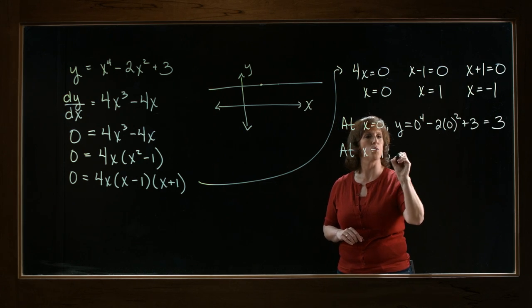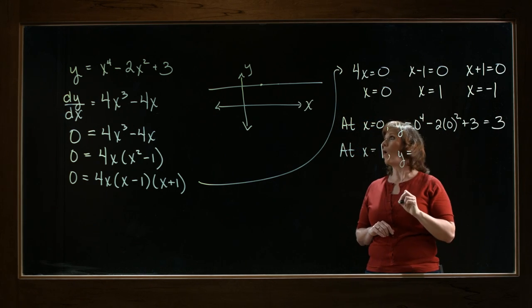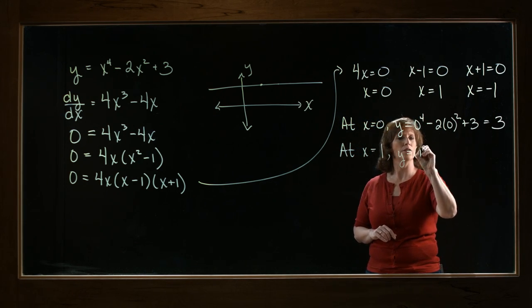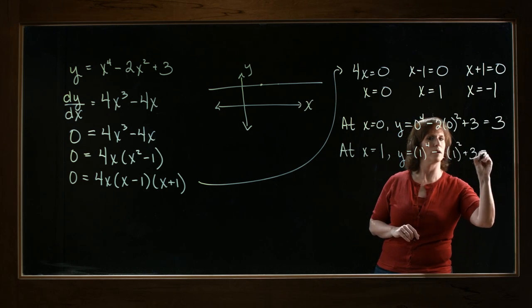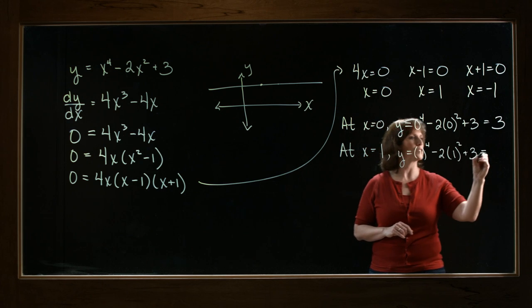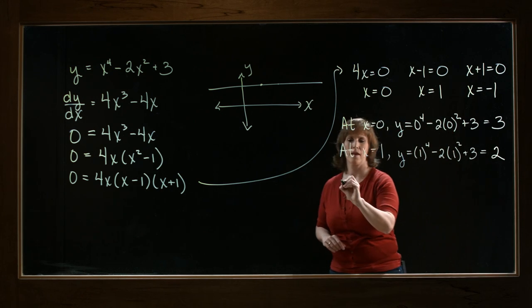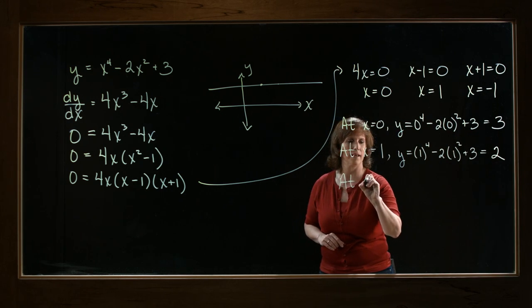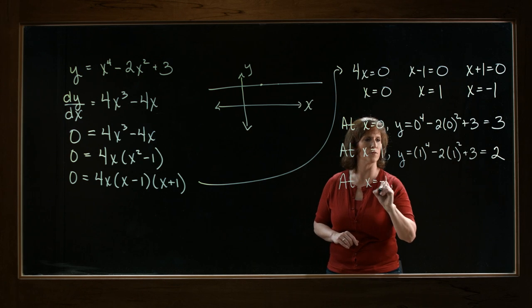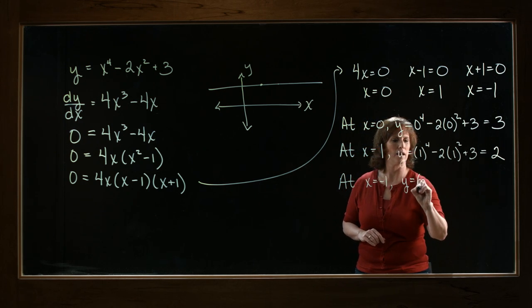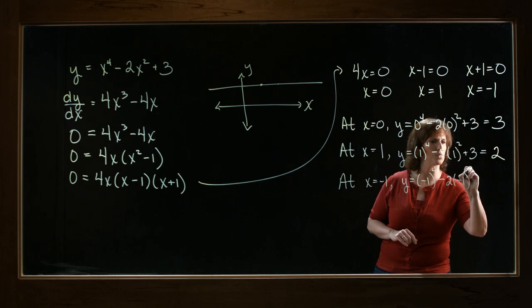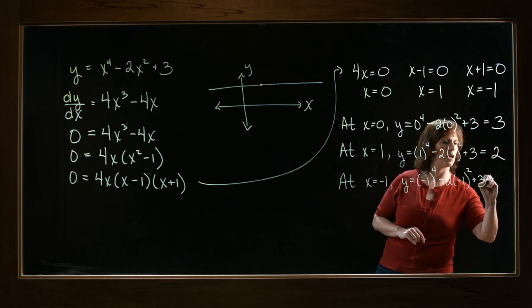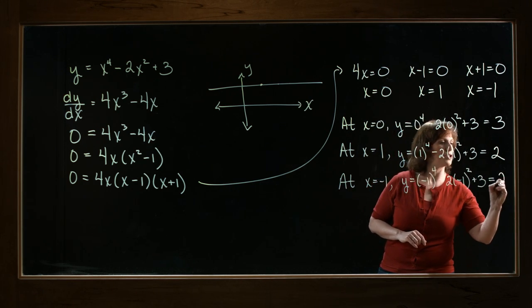At x equals 1, y will be 1 to the fourth minus 2 times 1 squared plus 3. That's going to give us 2. And at x equals negative 1, y will be negative 1 to the fourth minus 2 times negative 1 squared plus 3, which also gives us 2.